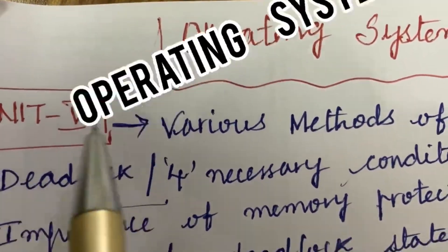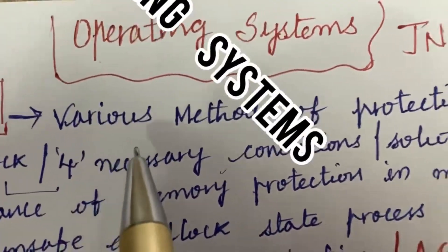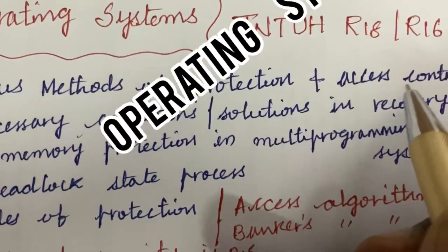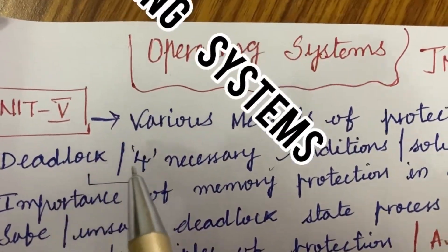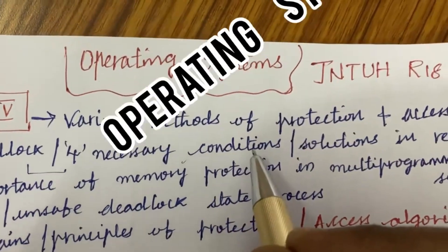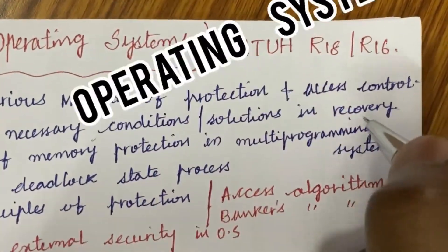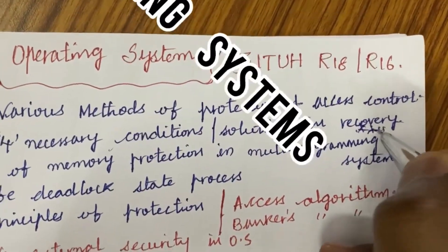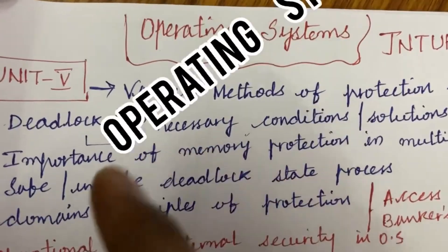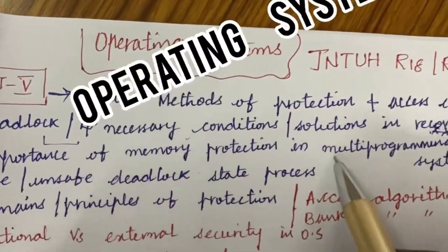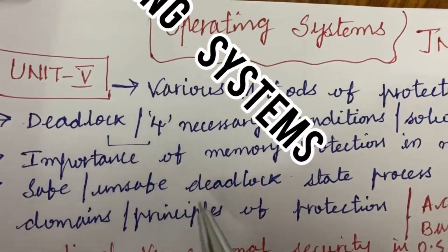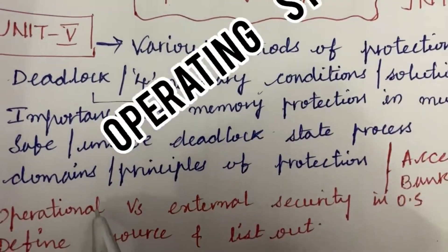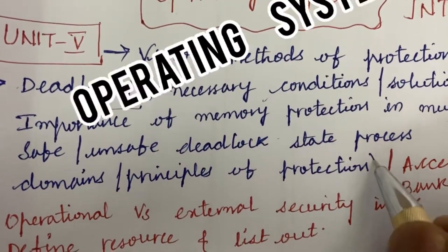I have come up with certain gunshot questions. The first question I have taken is from Unit 5: List out the various methods of protection of access control, as well as define deadlock and four necessary conditions and solution in recovery. Deadlock is a gunshot question and we're getting one question for sure. Importance of memory protection in multi-programming systems is also asked several times.